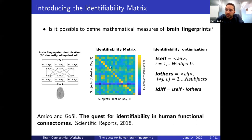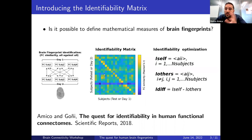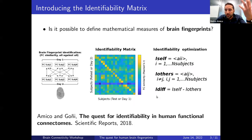To give a few examples: an element on the main diagonal represents the similarity of my connectome in day one versus my connectome in day two — a kind of self-similarity, or 'I-self' as we call it. An off-diagonal element represents the similarity of my connectome in day two versus someone else's connectome in day one. Note that this matrix is not symmetric because the day one/day two encoding breaks the symmetry. We then define 'differential identifiability' as the difference between I-self and I-others — the main diagonal values minus the off-diagonal values.